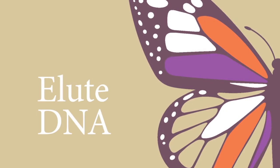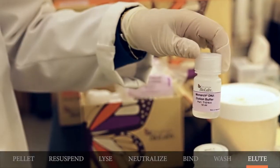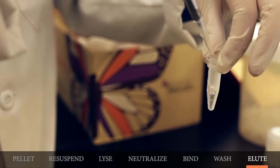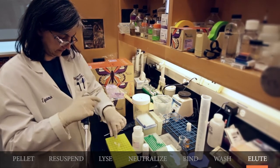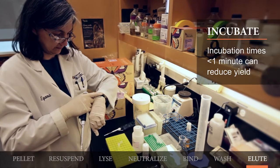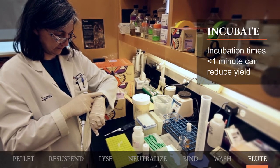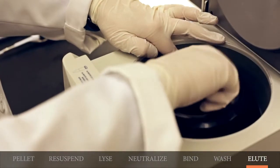Now for the elution step. You will add a minimum of 30 microliters of DNA elution buffer to the center of the column matrix. Incubate the solution for one minute at room temperature. This incubation step is very important to guarantee maximum yields. Centrifuge for one minute and collect the flow-through. The flow-through now contains your purified plasmid DNA.